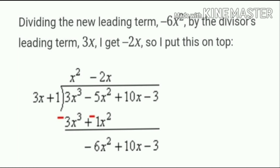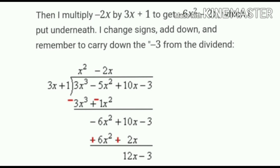We divide -6x² by 3x to get -2x, which is written on top next to x². Then we multiply -2x by the divisor 3x + 1: (-2x)(3x) = -6x² and (-2x)(+1) = -2x. Signs are very important here — don't forget them.